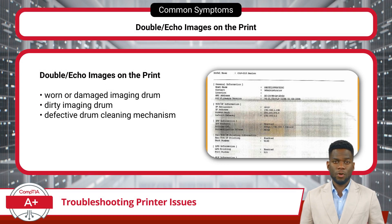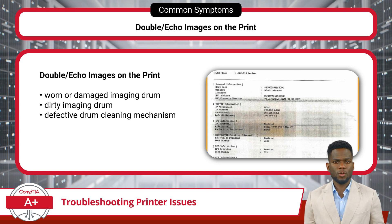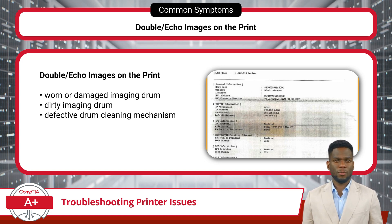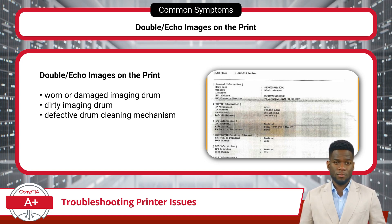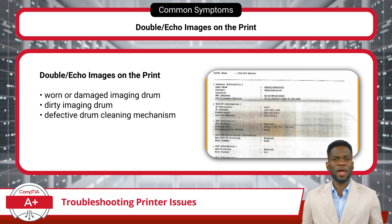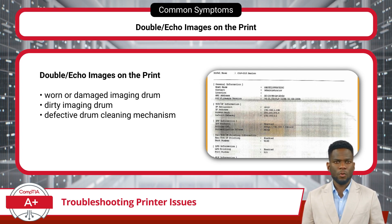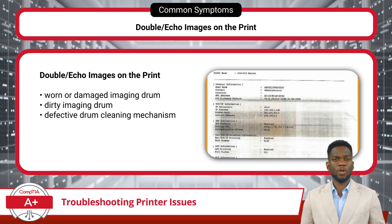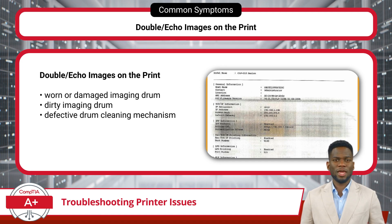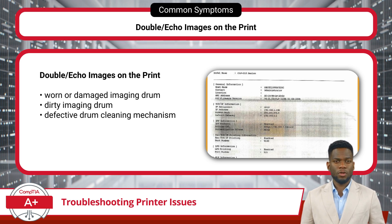When encountering double images, also known as echo images, on printed documents, it's important to address the underlying causes. First, check the imaging drum responsible for transferring toner onto the paper. Inspect it for visible signs of damage, wear, or contamination, and clean it using a lint-free cloth and isopropyl alcohol, or as directed by the manufacturer. Additionally, inspect the printer's cleaning mechanism, which removes excess toner or debris from internal components including the drum.